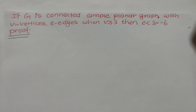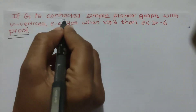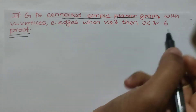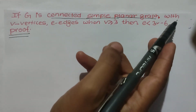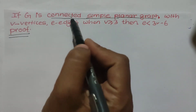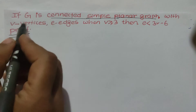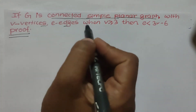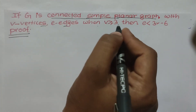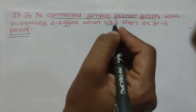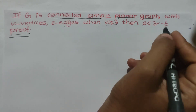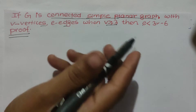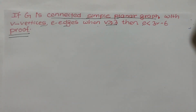Hello everyone. I am using a new theorem of planar graphs. If G is a connected simple planar graph, when V is greater than or equal to 3, then E is always less than or equal to 3V minus 6. This applies to graphs without parallel edges and loops.